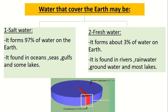97% of Earth's water is salt water, found in oceans, seas, gulfs, and some lakes. The fresh water, which is 3%, can be found in rivers, rainwater, groundwater, and most lakes.